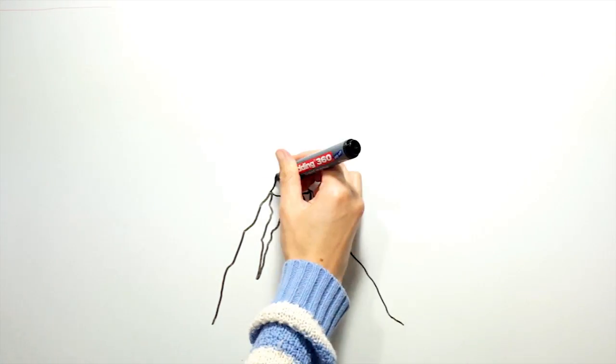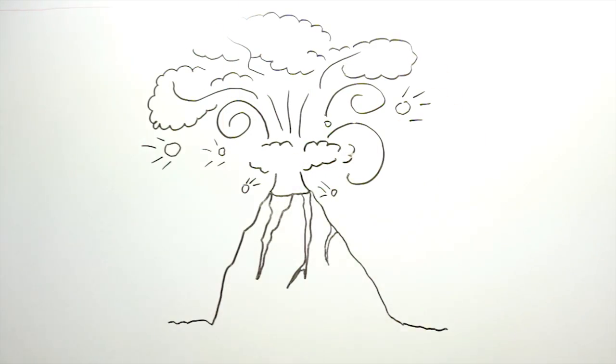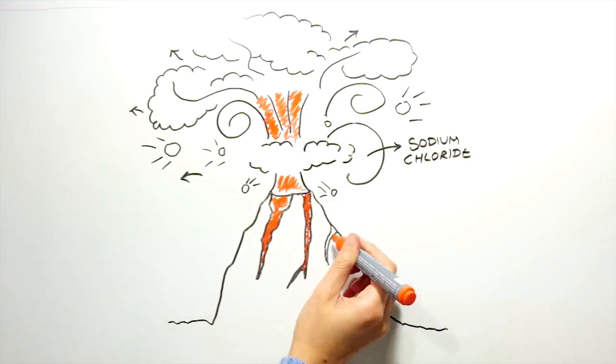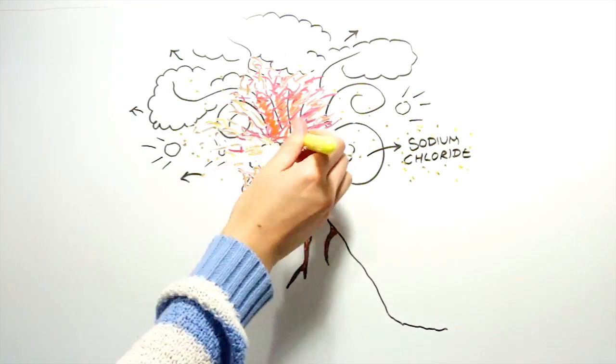Underwater volcanoes will also contribute to the saltiness of the sea, but to a lesser extent than rainwater. When these volcanoes erupt, they release many minerals which are trapped in the earth's crust. Some of these minerals are sodium and chloride, and these will flow into the sea.